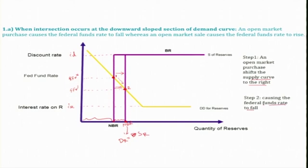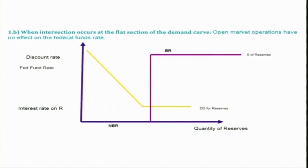So we can say that an open market purchase by the Fed causes the Federal funds rate to fall, given that the intersection of the supply curve occurs at the downward-sloped section of the demand curve. Now let us see what happens when the intersection occurs at the flat section of the demand curve, where open market operations have no effect on the Federal fund rate.